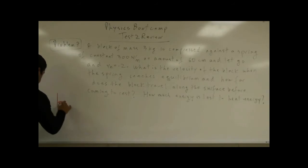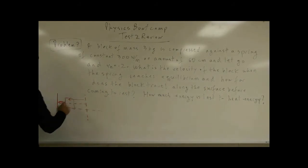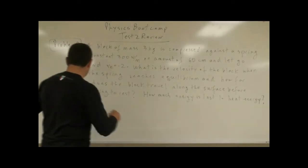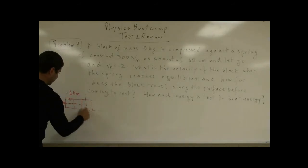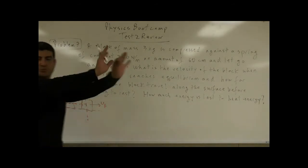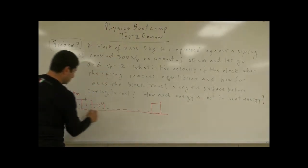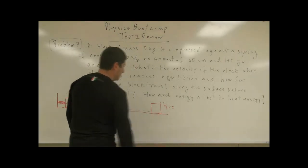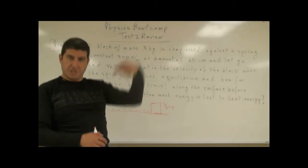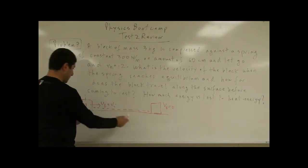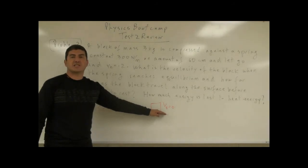You are compressing the spring, and then this is the equilibrium position. The distance that you are compressing is 60 centimeters, which is 0.60 meters. Then the spring is uncoiling — by the time the block gets to equilibrium, what's the final velocity of the block? Then the spring lets go of the block, and the block travels a certain distance until its final velocity is 0. The final velocity the spring gave the block becomes the initial velocity of the second stage; that initial velocity gives it forward motion, but friction eventually makes it stop.